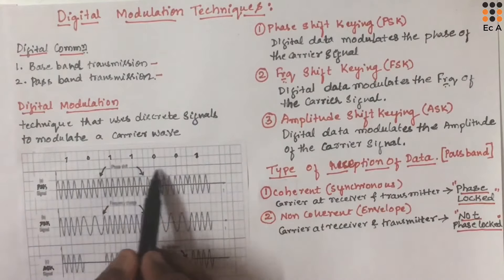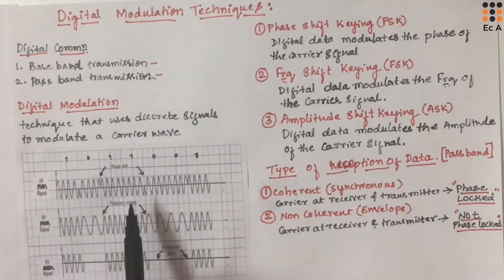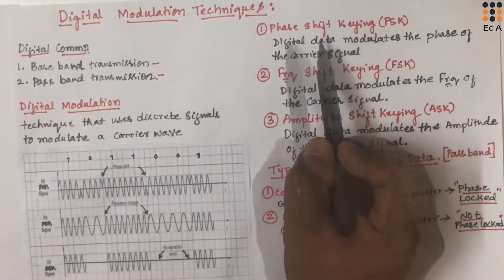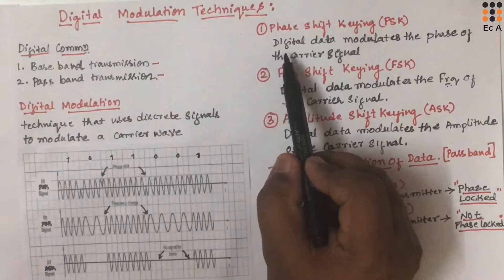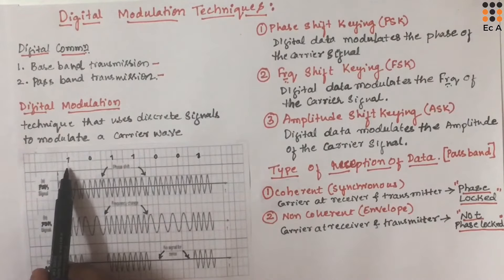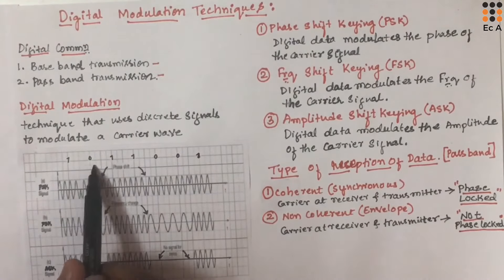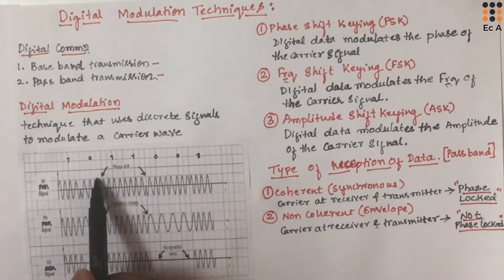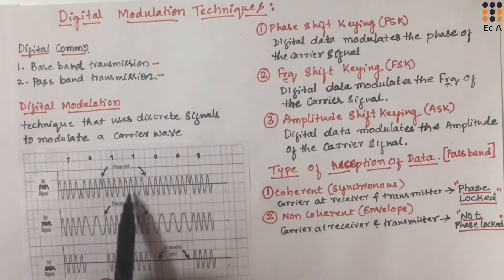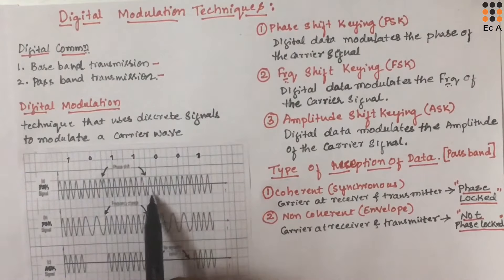Let us consider the first type of digital modulation technique, which is phase shift keying. If we take this digital data as an example — 10, 11, 001 — that needs to be transmitted. In phase shift keying, digital data modulates the phase of the carrier signal. When there is a transition from 1 to 0, there is a phase shift of 180 degrees in the carrier signal. Again, when there is a transition from 0 to 1, there is a phase shift of 180 degrees. If you observe the modulated signal, there is no phase shift when you are having the same sequence of data, such as 1 and 1, or 0 and 0.